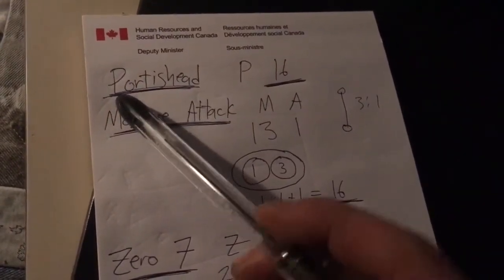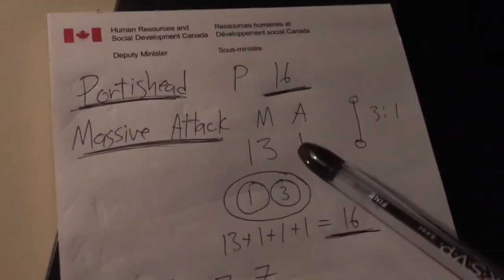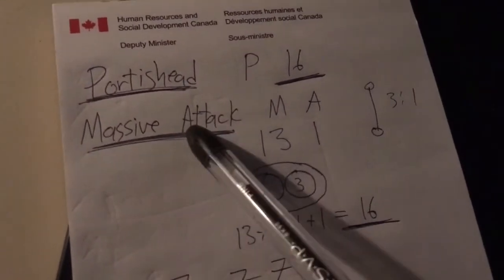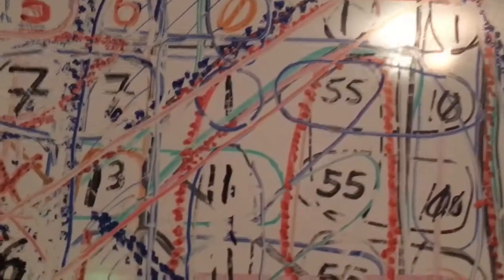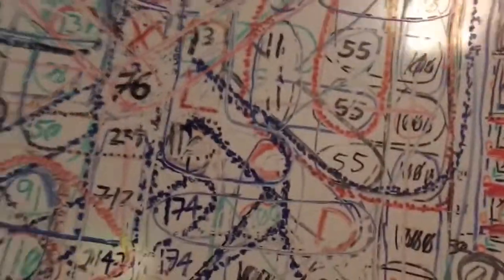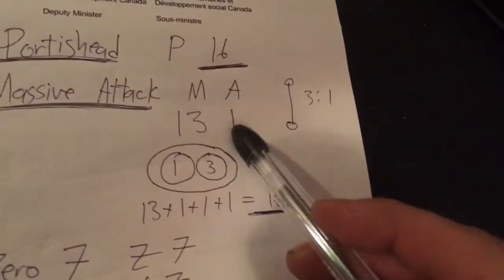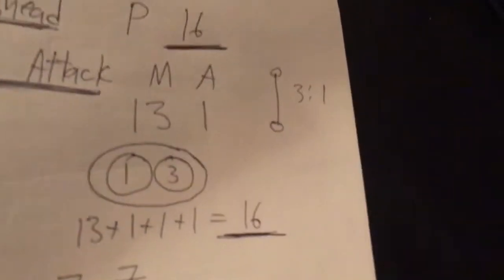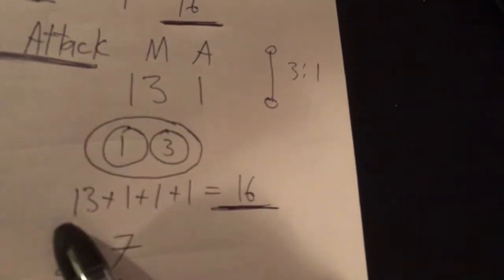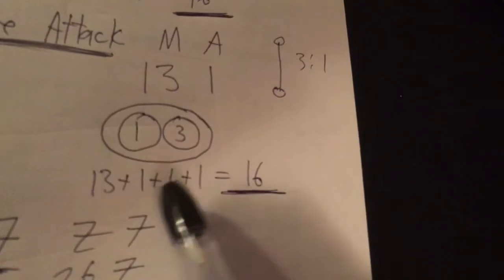So Portishead, capital P, 16th letter. Massive Attack is a 13-1. Now a 13-1 could be there, and we're gonna go with that one. You have to understand that a 1 is a 3 because it has a beginning, an end, and a middle. So it counts for the circled 1, the circled 3, and the circled 13. If you put in all these things - 1, 3, and the M, and you take your A to doubly circle everything, you have 13 plus 1 plus 1 plus 1 is 16.